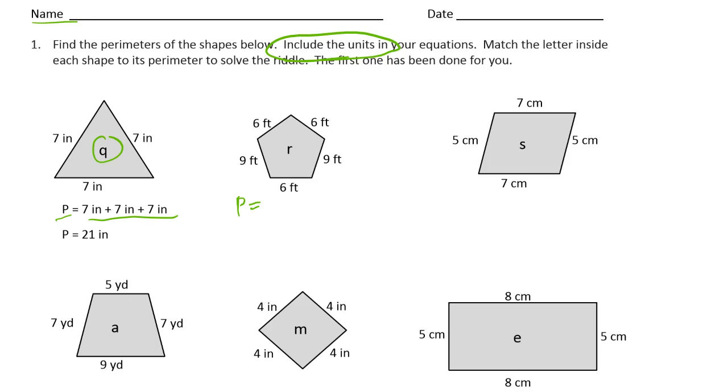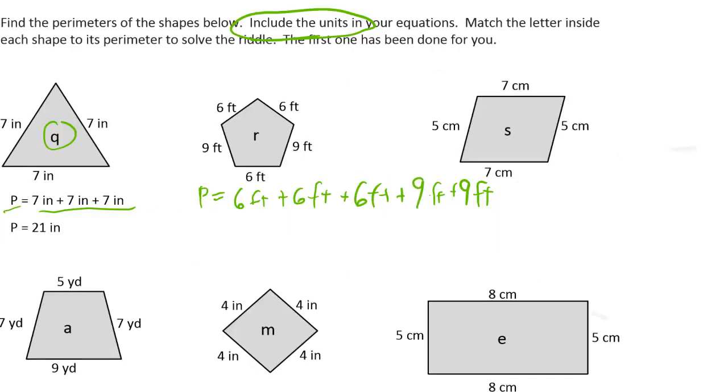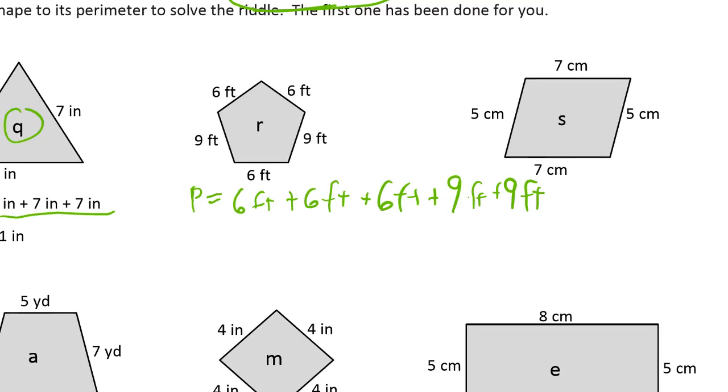We have three sixes and two nines here. So 6 feet plus 6 feet plus 6 feet plus 9 feet plus 9 feet plus 9 feet. We can add that all together mentally. The three sixes is 18 and the two nines is 18 and two eighteens is 36. So that's 36 feet.